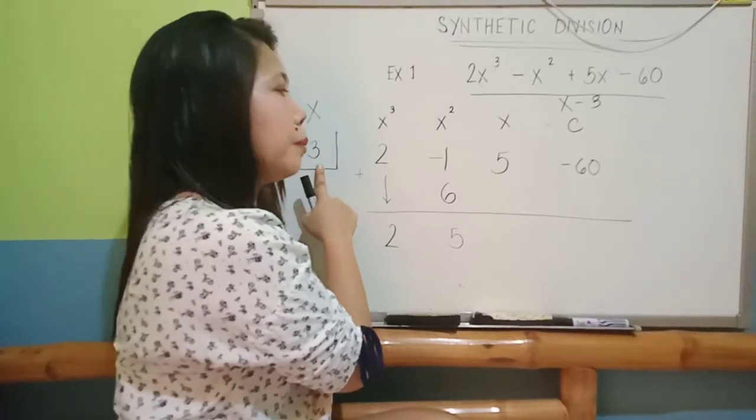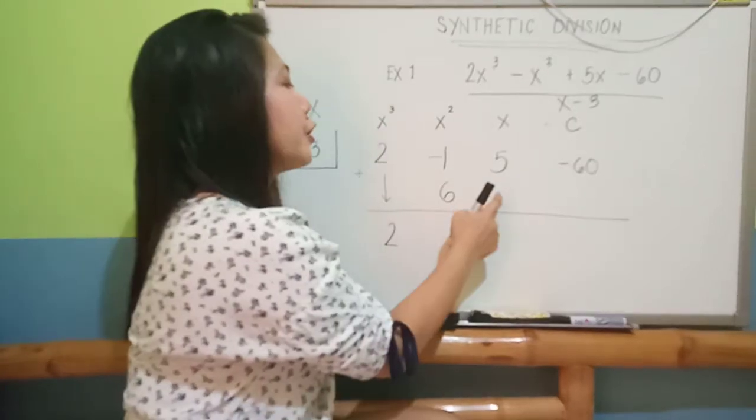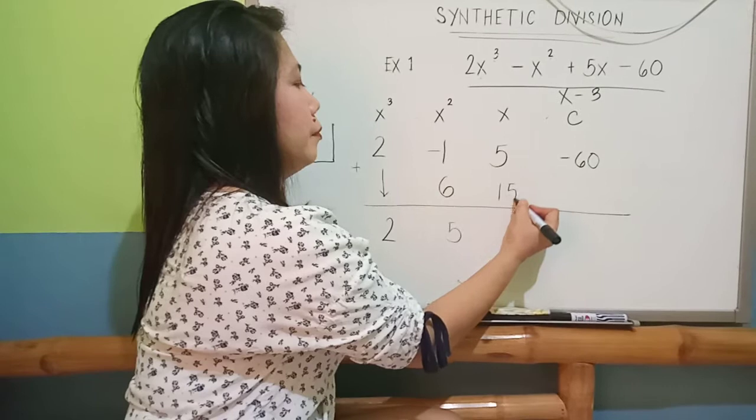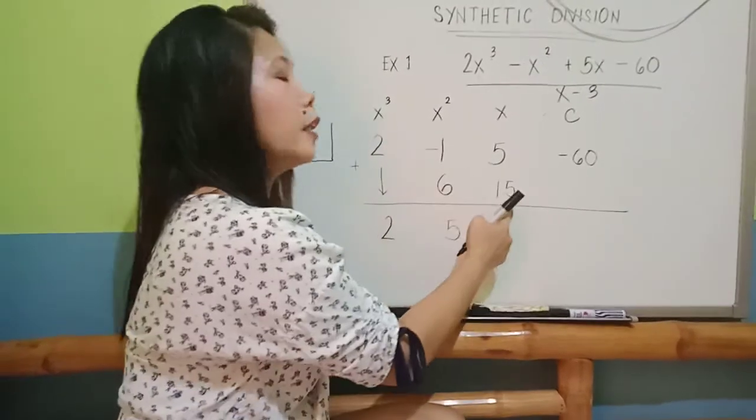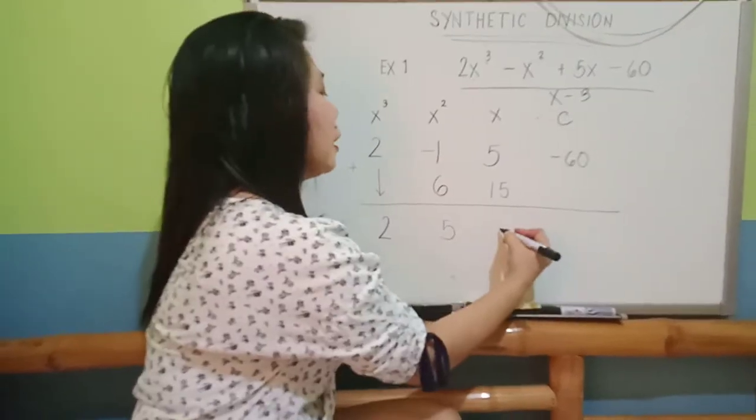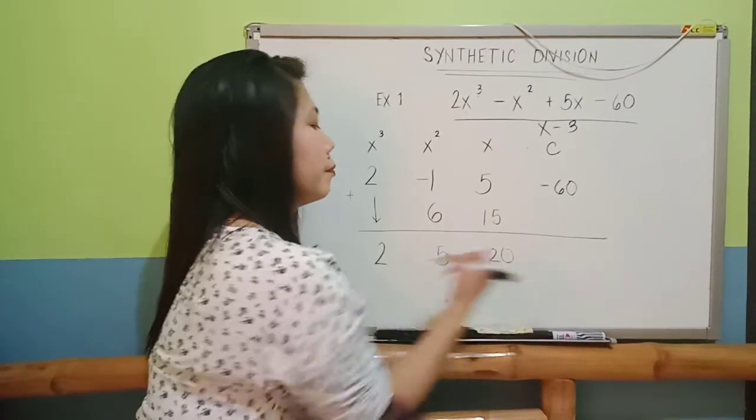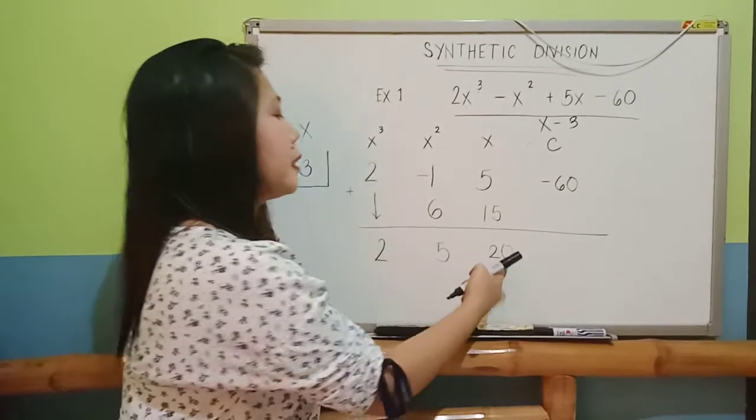Where are you going to place your 15? Under the 5 here. And then, you have to add it all. That will be positive 20.